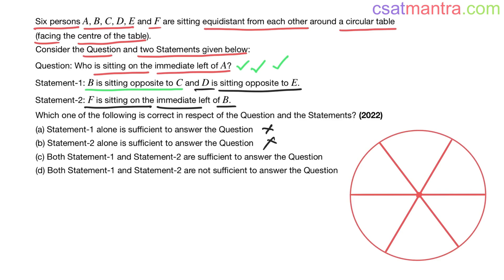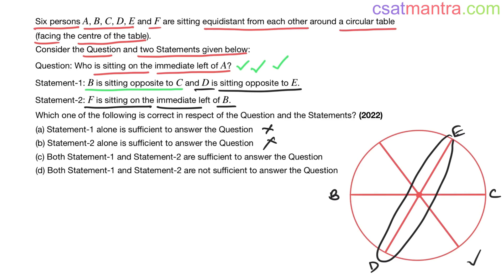Now combining both statements: B is sitting opposite to C, and D is sitting opposite to E. D and E should be on this line because F is immediately left of B. With F here, we have A here, and the immediate left of A is D.